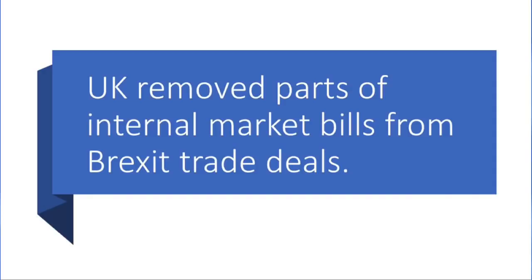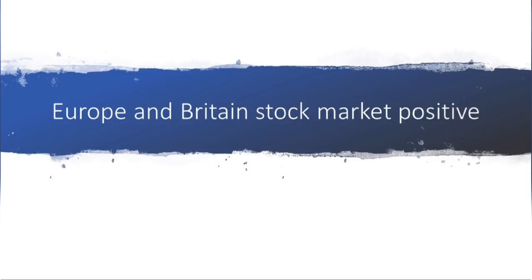So the Australian dollar is going to be stronger. The pound is stronger. In the UK and the euro, in the Brexit deal, the internal market bills are removed from the internal market bills. So the UK's GBP is very strong, and the stock market is stronger. The euro and Britain — the two stock markets are stronger.